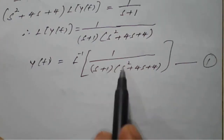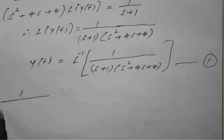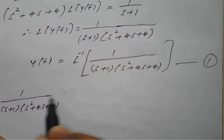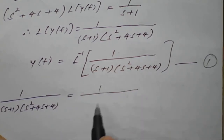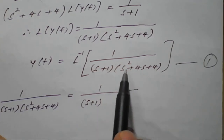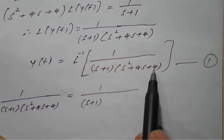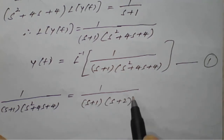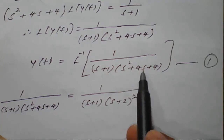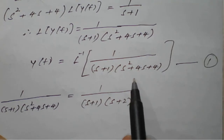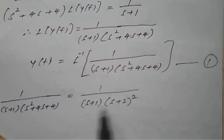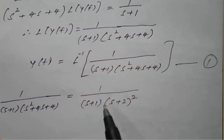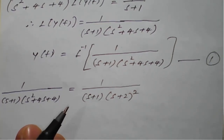We pick 1/[(s+1)(s² + 4s + 4)]. The quadratic s² + 4s + 4 is of the form (a+b)² — specifically (s+2)², since it factors as s² + 2·2·s + 2². We will simplify this using partial fractions.